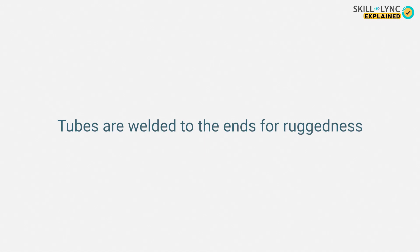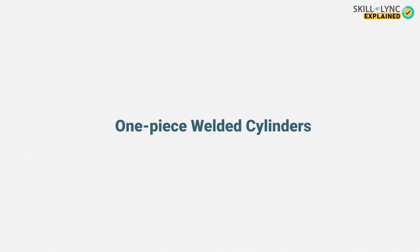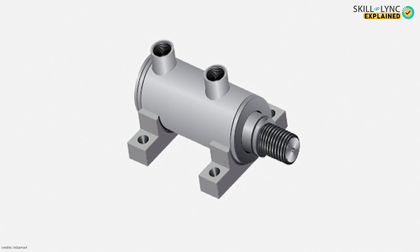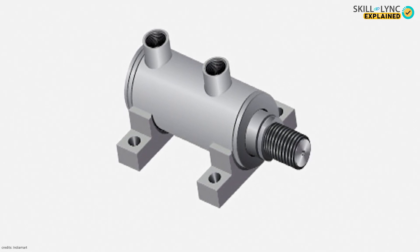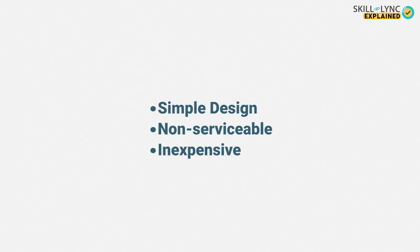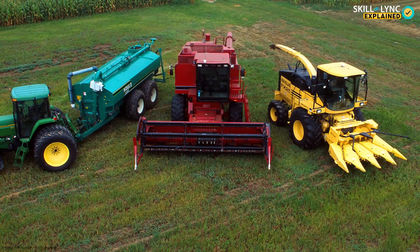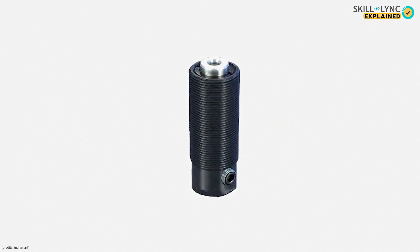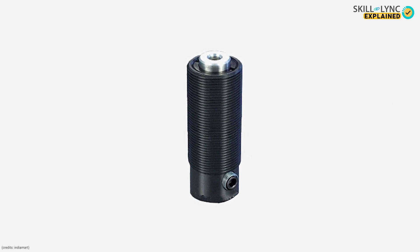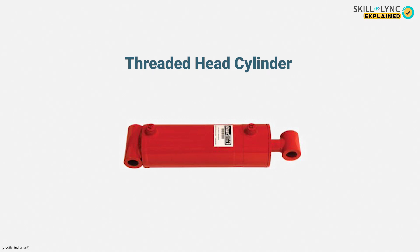Mill type cylinders are similar in construction to tie rod cylinders and are used in places with severe operating conditions. The cylinder tubes are welded to the flanges before finishing to ensure extra ruggedness. The next type is called one piece welded cylinders — these are either welded at the ends or cast in one single piece, making them simple in design. Such cylinders are non-serviceable but inexpensive, and unlike mill or tie rod types, cannot be used for heavy duty applications, making them common in farm equipment with moderate duty cycles. The last construction type is the threaded head cylinder, where the ends are threaded and screwed to the tube. They require special care and are placed inside a covering to achieve perfect concentricity and prevent leakage.